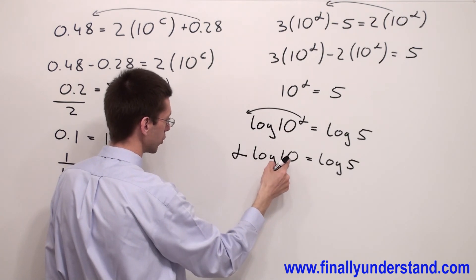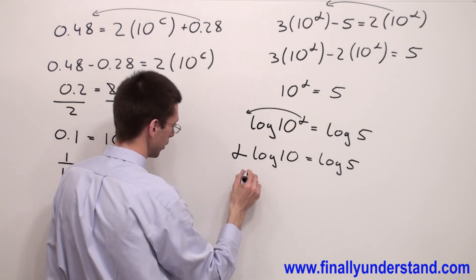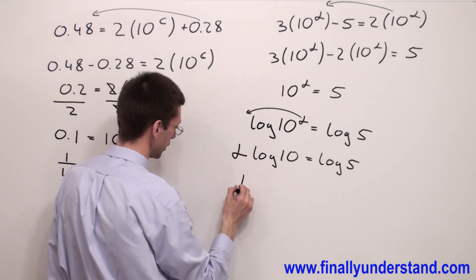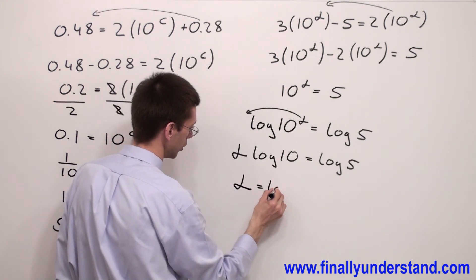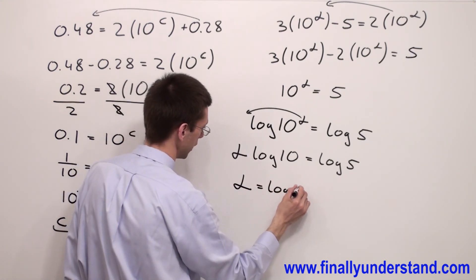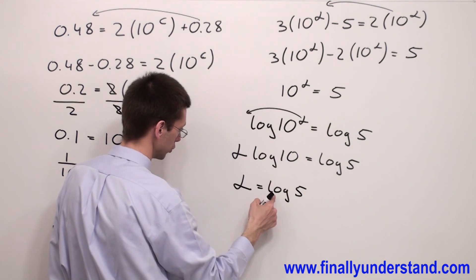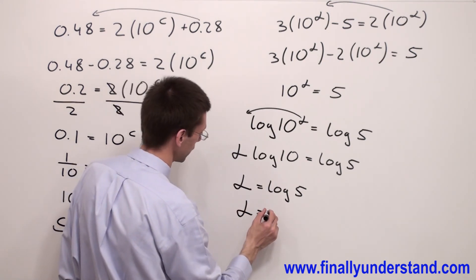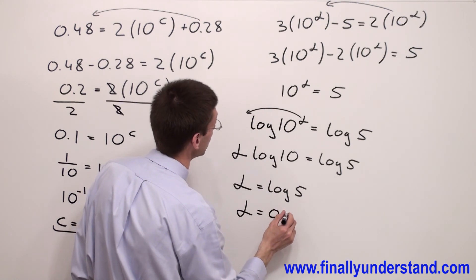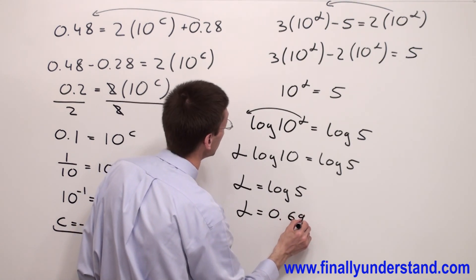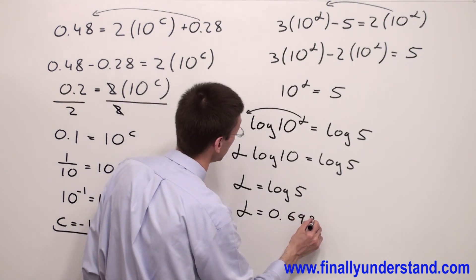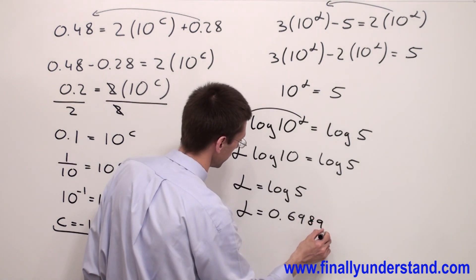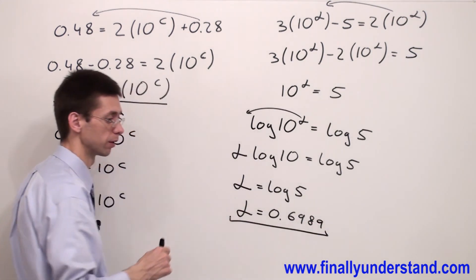Log of 10 is equal to 1. One times alpha is simply alpha. Alpha equals log of 5, so if you are going to use the calculator you will have alpha equals 0.6989, and this is the solution to this problem.